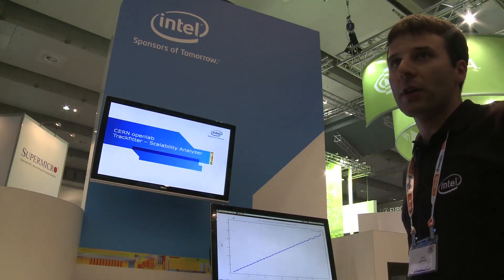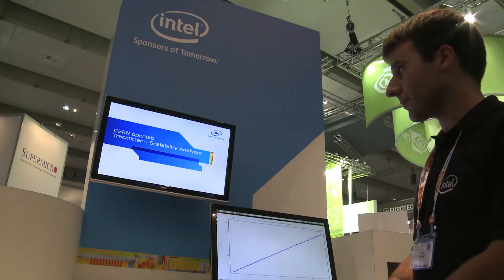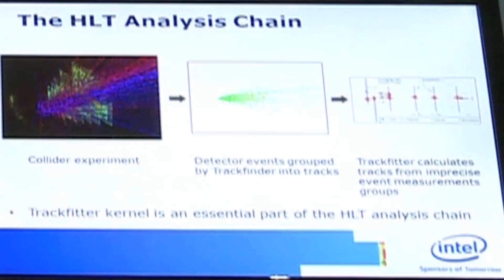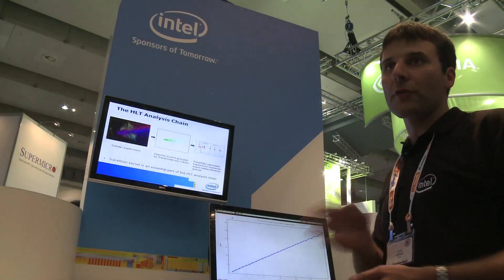This is a small benchmark code that we extracted from our online framework, called the TrackFitter. The goal of the TrackFitter is mainly to reconstruct the tracks and extract the mathematical properties of the tracks, to be able to understand if the tracks are of interest. The goal of the online reconstruction is mainly to decide if a track is good or if we have to store it.